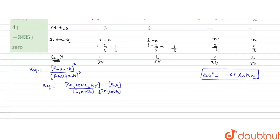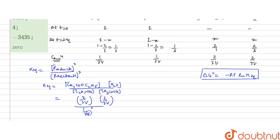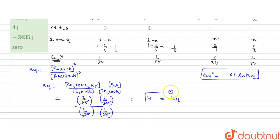For this reaction, the products are ester and water, and the reactants are ethyl alcohol and acetic acid. So Kc = [ester][water] / ([ethyl alcohol][acetic acid]). Substituting: (2/3V)(2/3V) / ((1/3V)(1/3V)). The V terms cancel, giving Kc = 4.